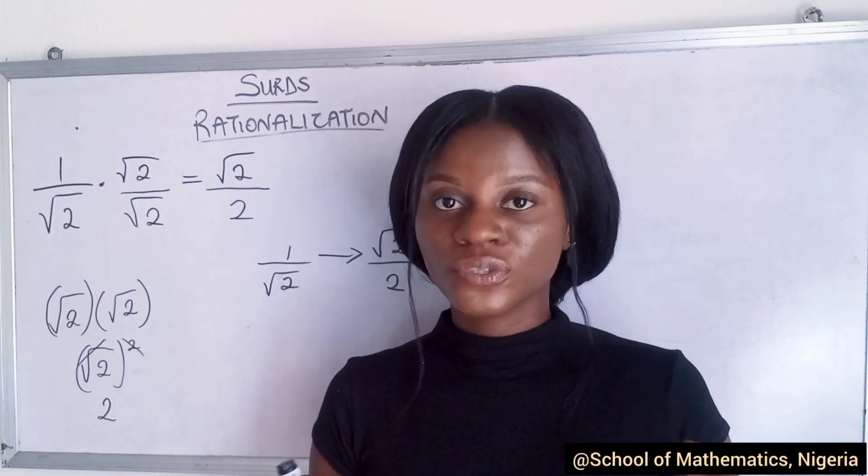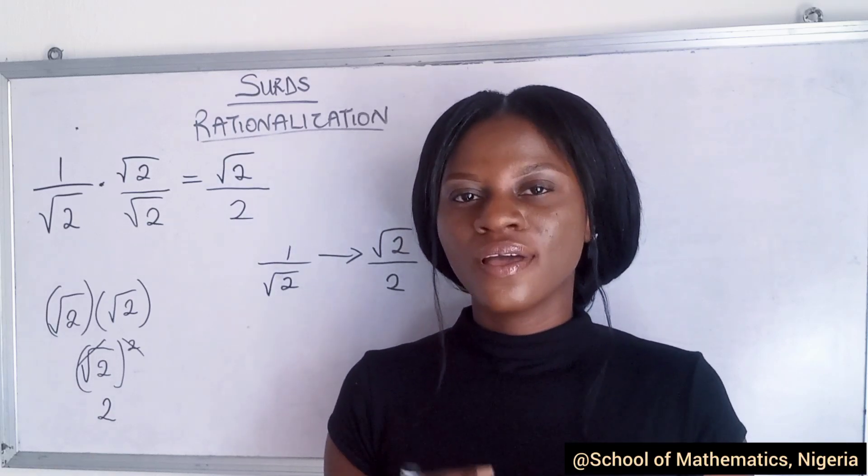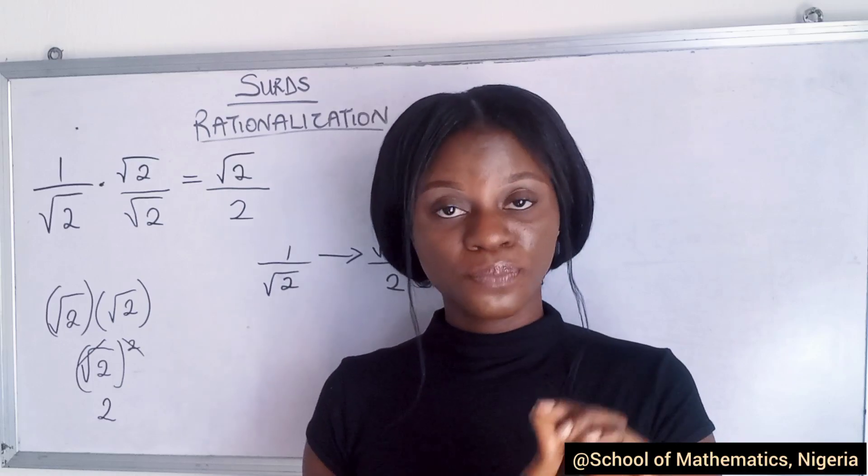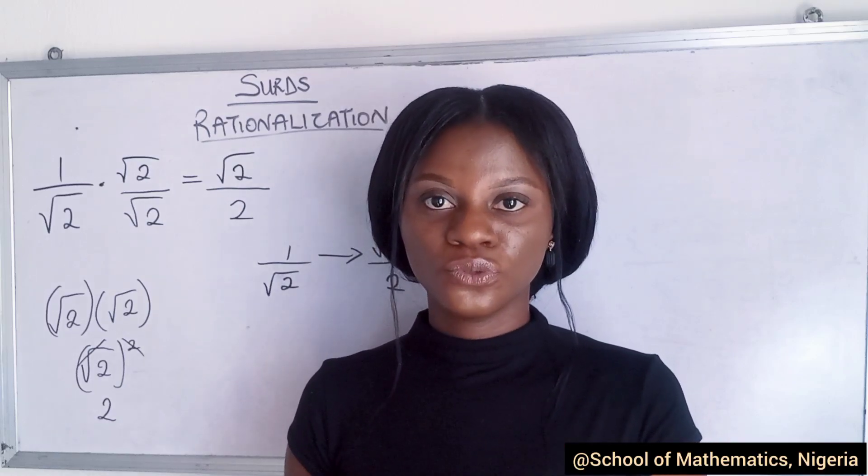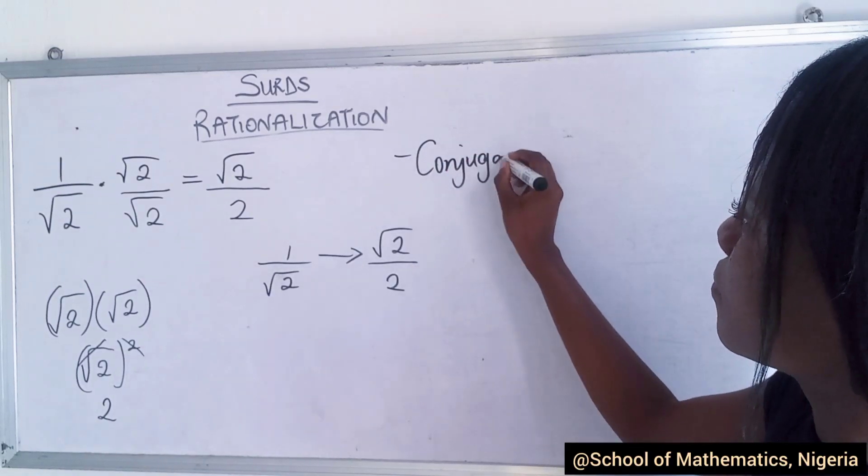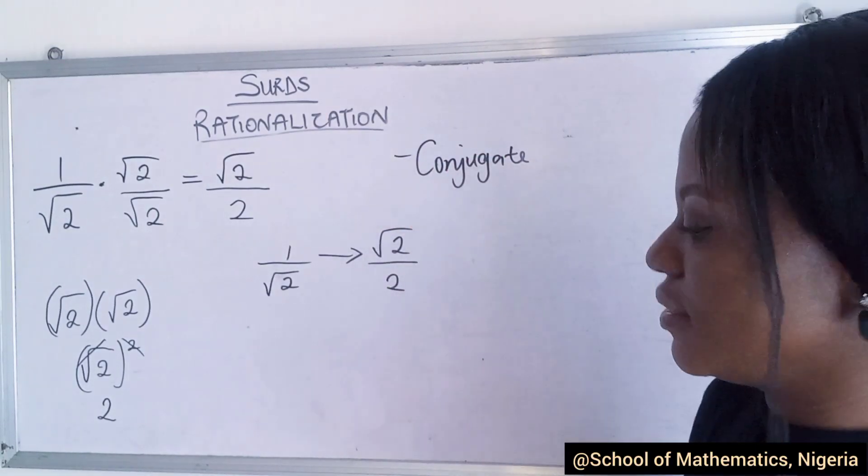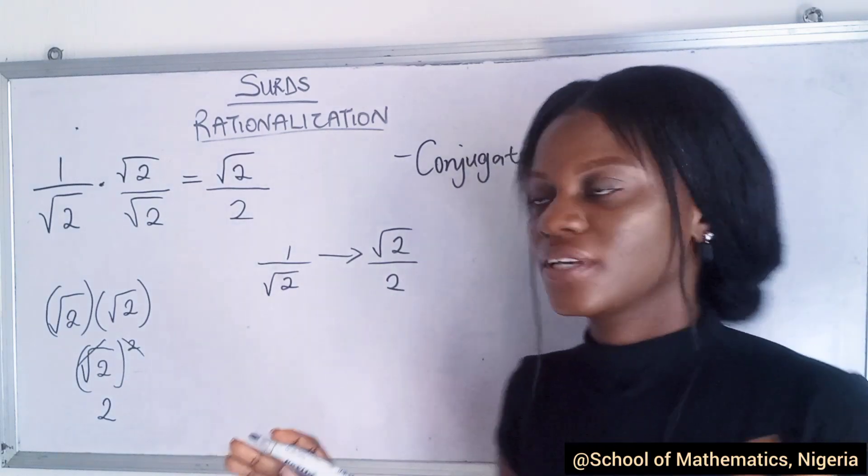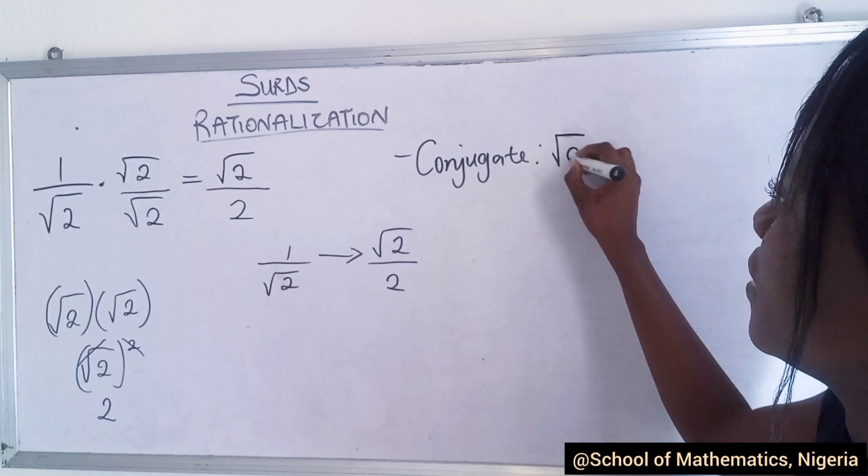While we have some examples you will be able to get this, but there is something I need you to know again. There is this important thing that needs to be known which is called the conjugate. The conjugate of a value in mathematics is the opposite sign.